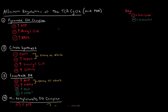In the last video, when I talked about the eight steps of the TCA cycle, I mentioned that there were four enzymes, including the one from the pyruvate dehydrogenase complex, that are allosterically regulated. I want to talk about what allosterically regulates them — what are their effectors.